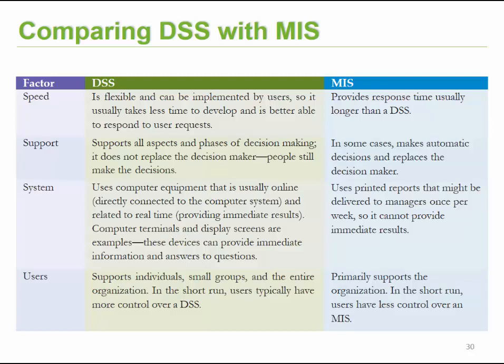DSS are usually online systems providing real-time information through computer terminals and display screens, where you enter information and get immediate responses. MIS typically involves interaction with printed reports generated by the system and does not provide real-time information. Regarding users, DSS supports individuals, small groups, and the entire organization, whereas MIS is mainly aimed at the organization itself and does not cater for individual people.